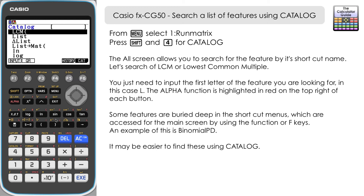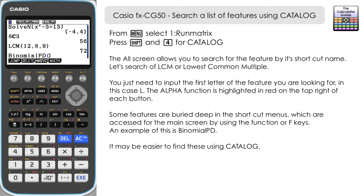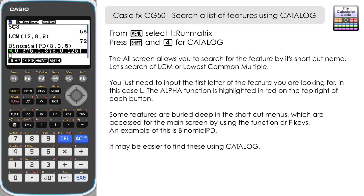Shift and 4 back to catalogue — we've got our search bar open. Let's press B for Binomial. It's not listed first, so we can input the second letter I and we've got Binomial features available alphabetically. We want Binomial PD, so let's scroll down and select that. Let's say we want the distribution for heads on a fair coin — we throw the coin three times with a probability of 0.5 for heads. You can see the distribution: 0 heads 0.125, 1 head 0.375, 2 heads 0.375, and all three heads 0.125 — all the probabilities listed for us.